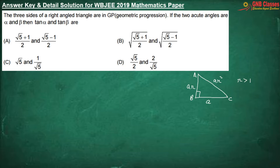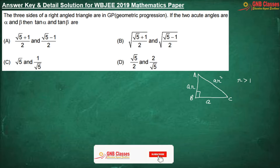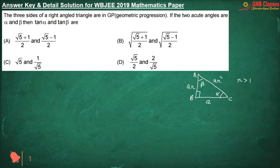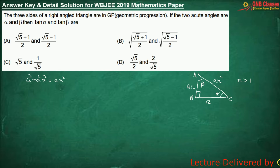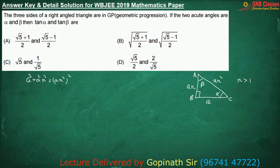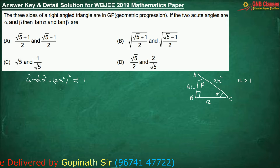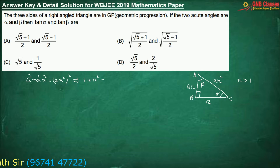Now, the two acute angles are alpha and beta. Let us say this angle is alpha and this angle is beta. From the Pythagoras theorem, we can say that a squared plus a squared r squared equals ar squared whole squared, which gives us 1 plus r squared equals r to the power 4.